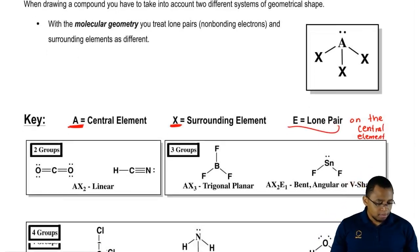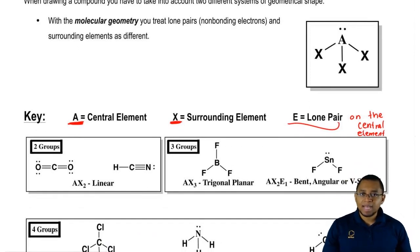If we look at this made-up compound AX3 up top with the lone pair, we'd say that A is the central element, it's connected to three surrounding elements, and it has one lone pair on the central element. So that would be E1.